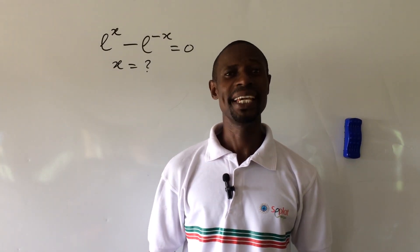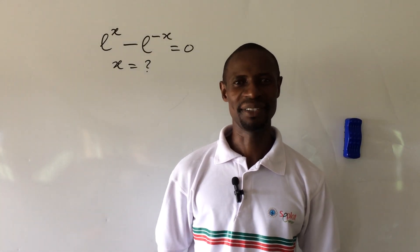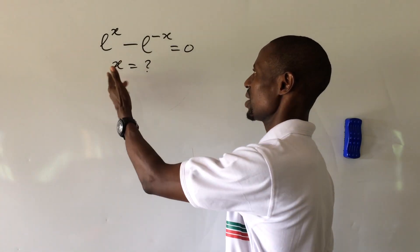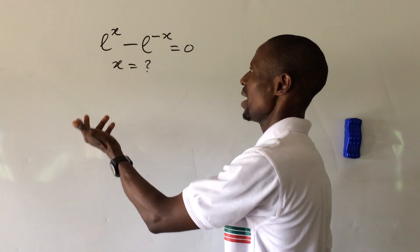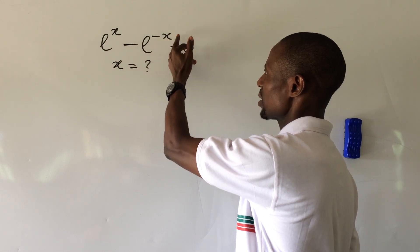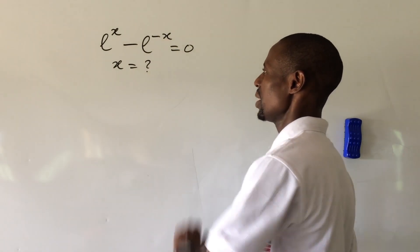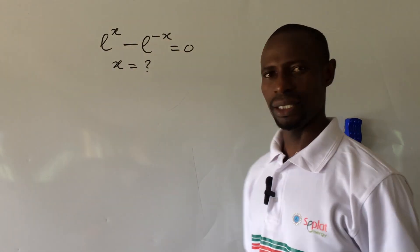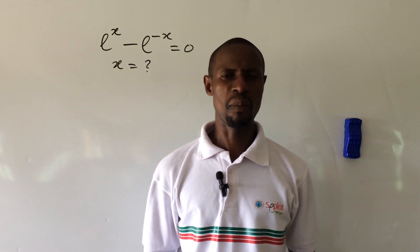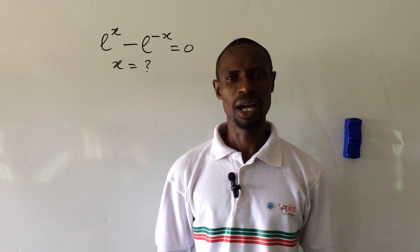Welcome to All iMansTV again. Here we have a very simple challenge. The question is e to the power of x minus e to the power of minus x equal to zero. What will be the value of x? Now the question is simple, but there is a reason why I decided to bring forth this question.